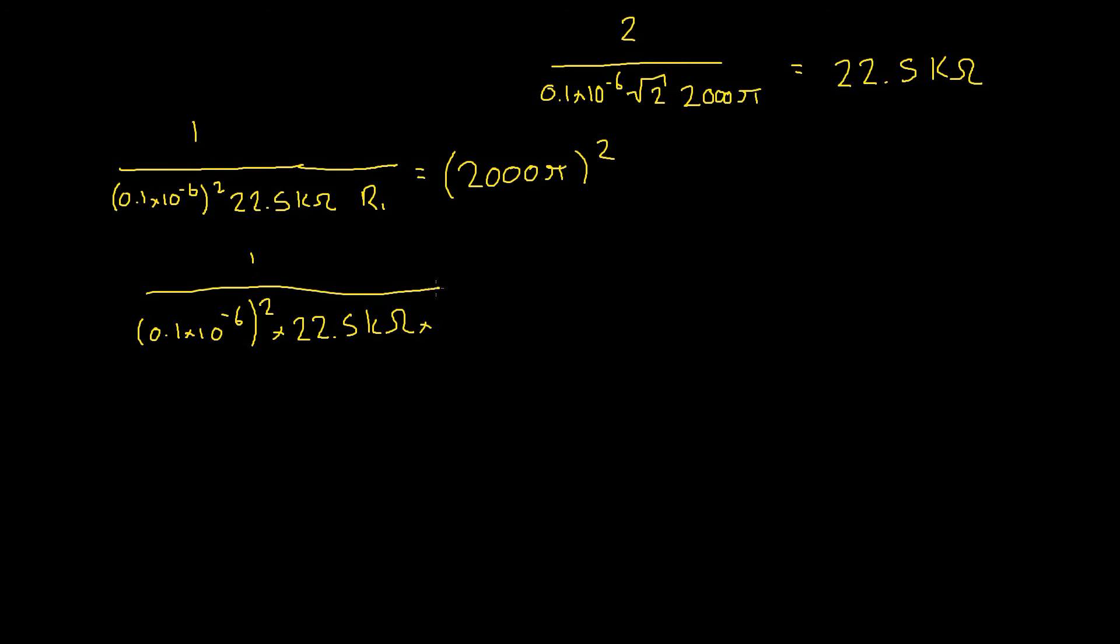times our 2000 pi squared which will be equal to R1. Just crunching the numbers, we get roughly 112.